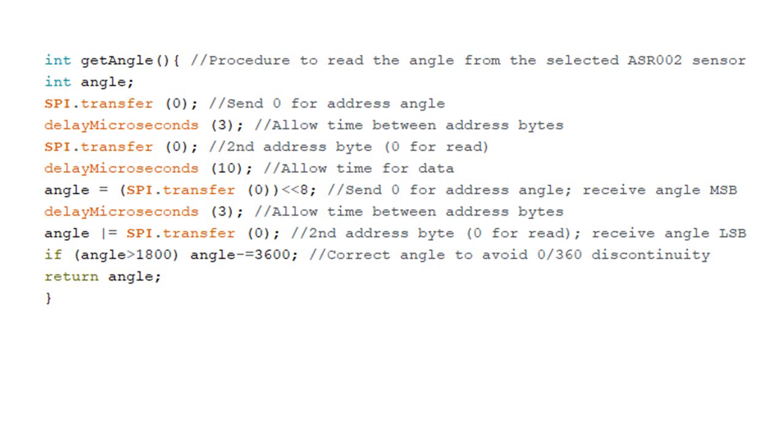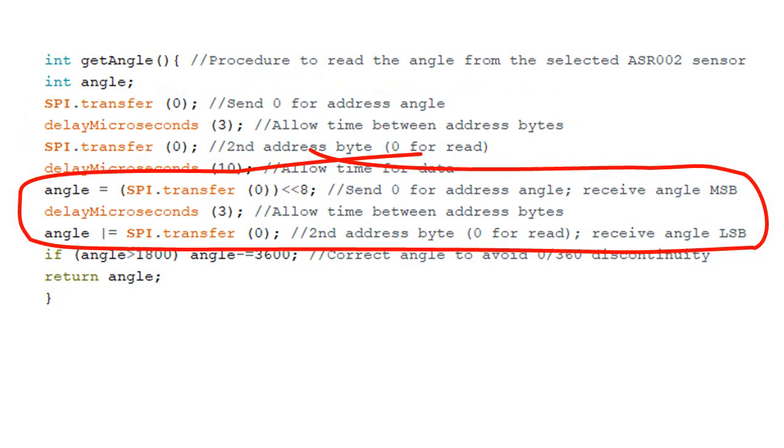Here's the Arduino program. There's a C procedure for reading the angle, which is a simple 4-byte sequence. We write the address, then read the 2-byte angle.